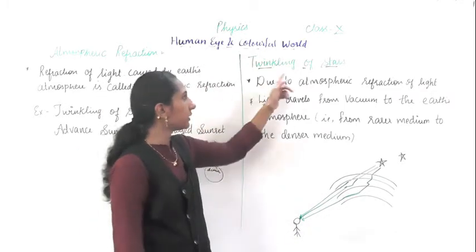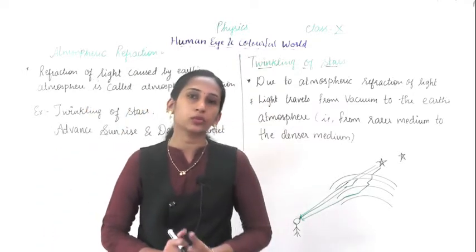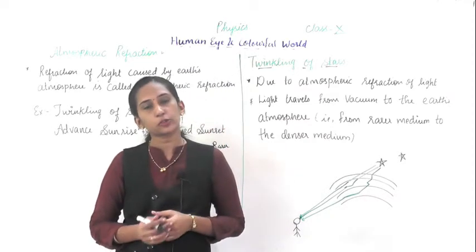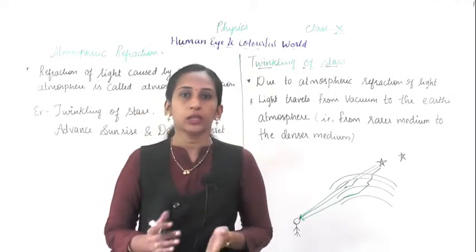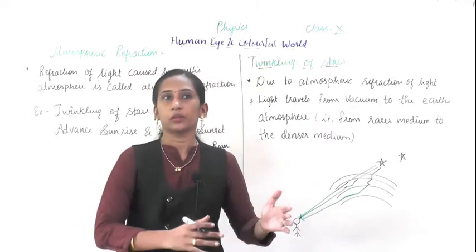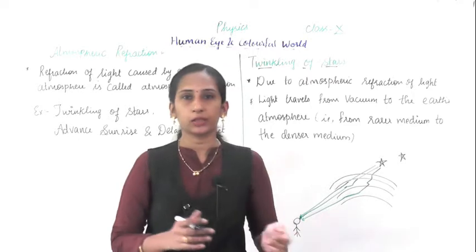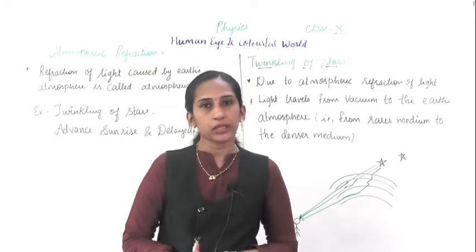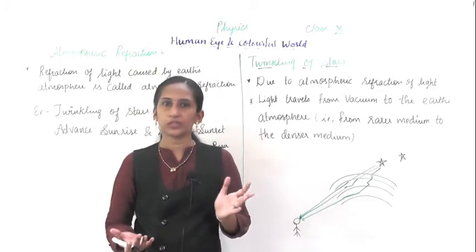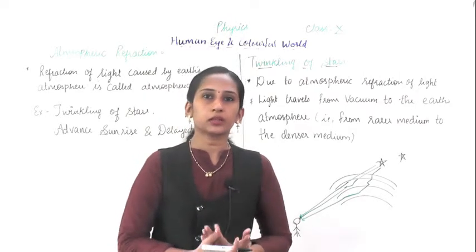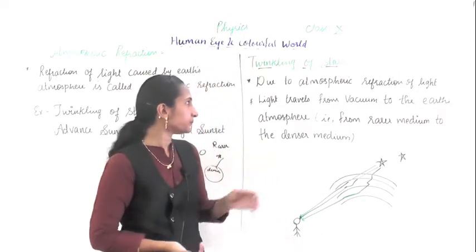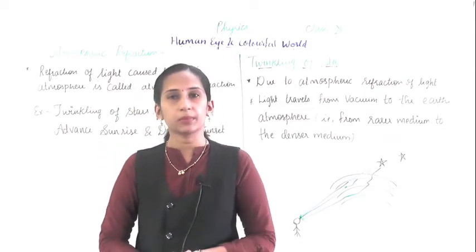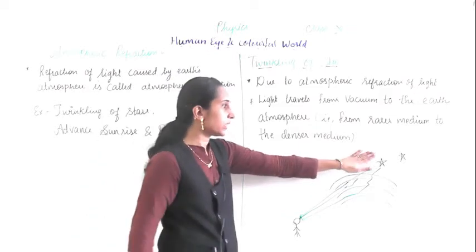Now the first example - the twinkling of stars. Why do stars twinkle? As you know, you have studied planets and stars, and the difference between them includes that stars twinkle but planets do not. So what exactly is the twinkling of star? Twinkling means a light on-off condition of stars. Stars emit their own light continuously.